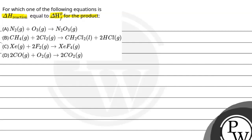Option A is: N₂ gas reacts with O₃ gas to form N₂O₃ gas. Option B is: methane gas reacts with 2Cl₂ gas to form CH₂Cl₂ liquid plus 2HCl gas. Option C says: Xe gas reacts with 2F₂ gas to form XeF₄ gas. Option D says: 2CO gas reacts with O₂ gas to form 2CO₂.